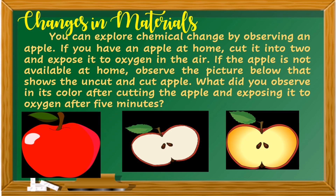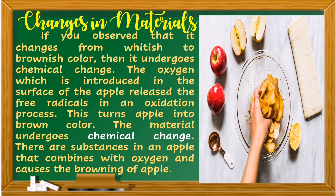The exposed one changed its color into brown. If you observe that it changes from whitish to brownish color, then it undergoes chemical change. The oxygen introduced on the surface of the apple releases free radicals in an oxidation process. This turns the apple brown. The material undergoes chemical change. There are substances in an apple that combine with oxygen and cause the browning of the apple.